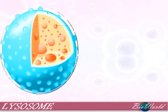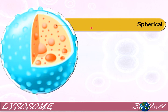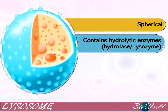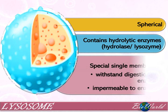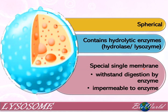Now let's get to know the structure of the lysosome. It is spherical and inside it contains enzymes — hydrolytic enzymes that carry out hydrolysis, so they are also known as hydrolases. The organelle is very special in that, although it is only made up of a single membrane, that membrane can withstand digestion by the hydrolytic enzymes, meaning these enzymes cannot digest the membrane of the lysosome. Besides that, the membrane is also impermeable to the enzymes, meaning the enzymes inside the lysosome cannot escape to the cytoplasm.